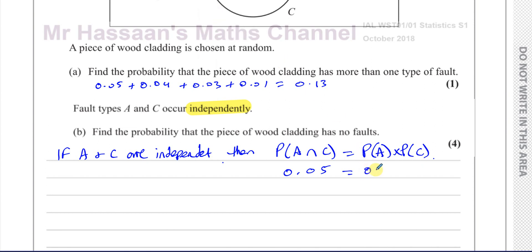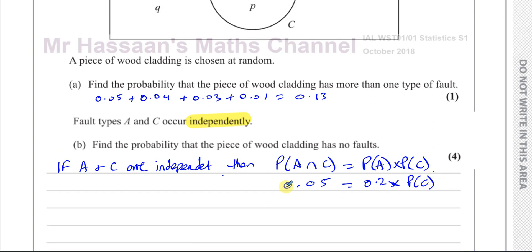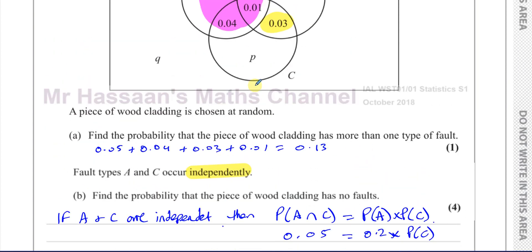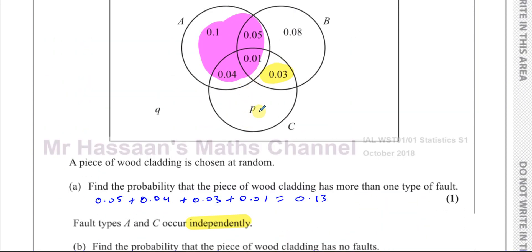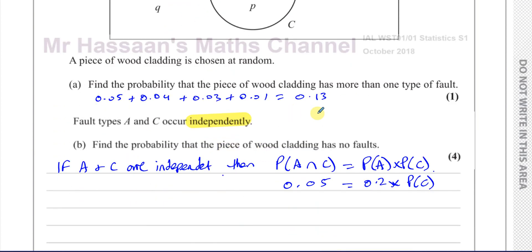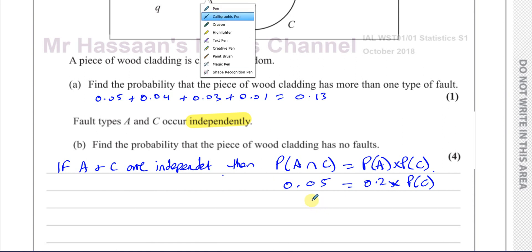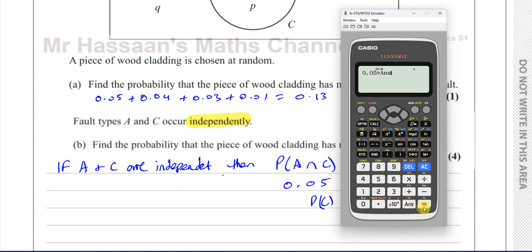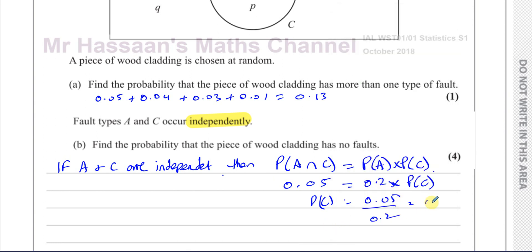That will allow us to find the probability of C. So P(A ∩ C) = 0.05 = P(A) × P(C) = 0.2 × P(C). Therefore P(C) = 0.05 divided by 0.2, which gives us one quarter, which is 0.25.